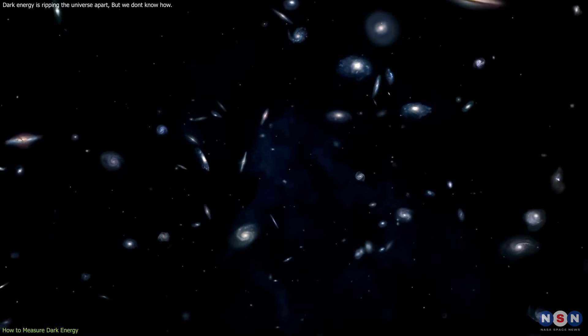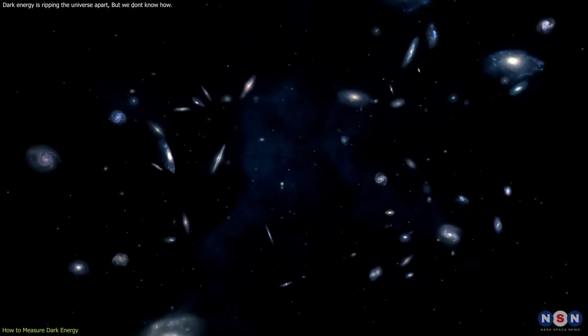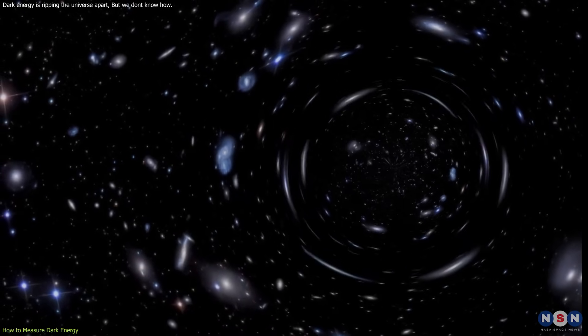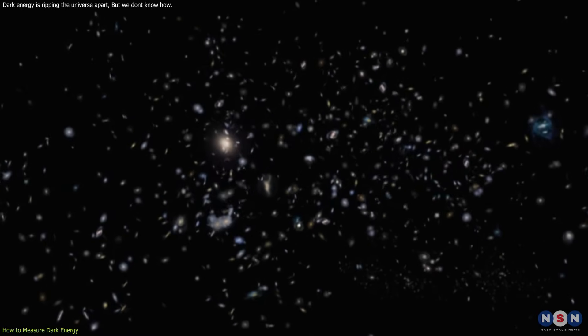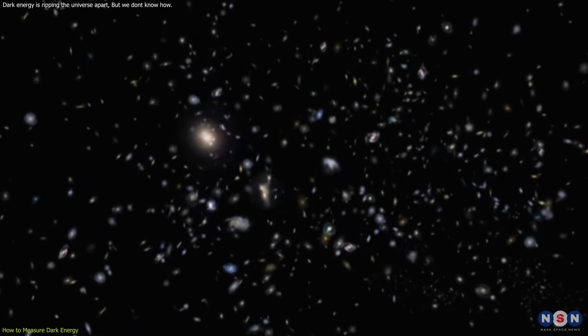Dark energy affects weak gravitational lensing by changing the geometry of the universe and the amount of matter in it.